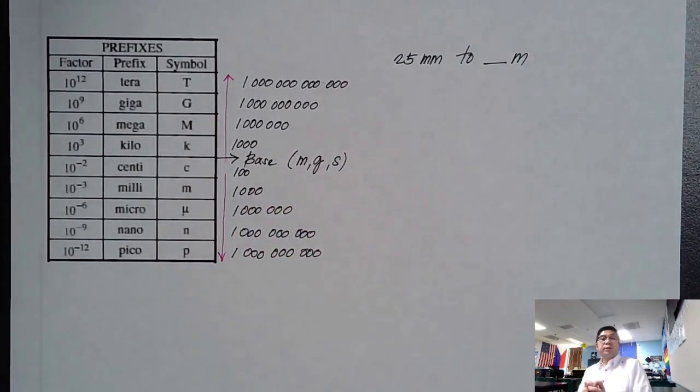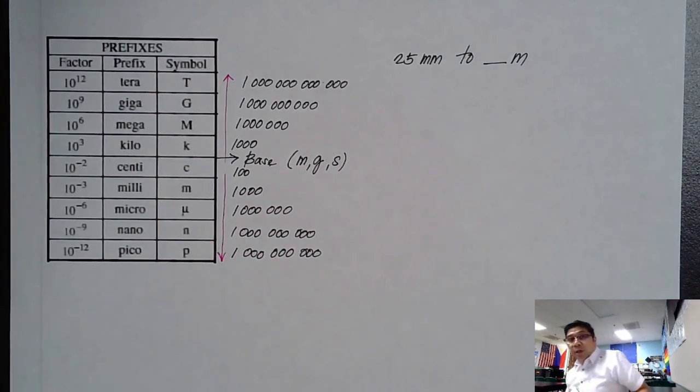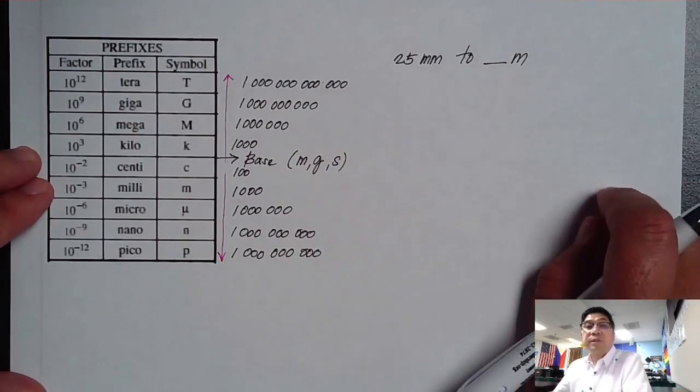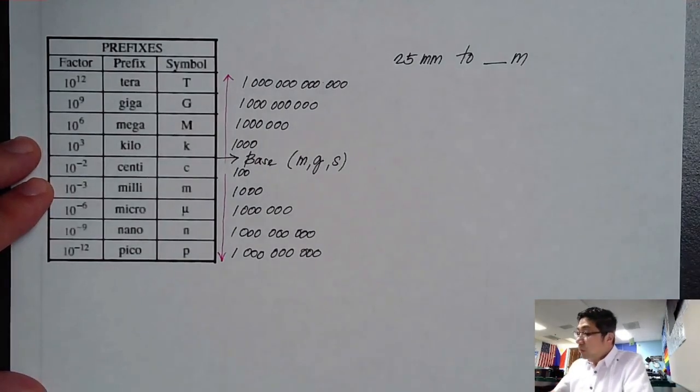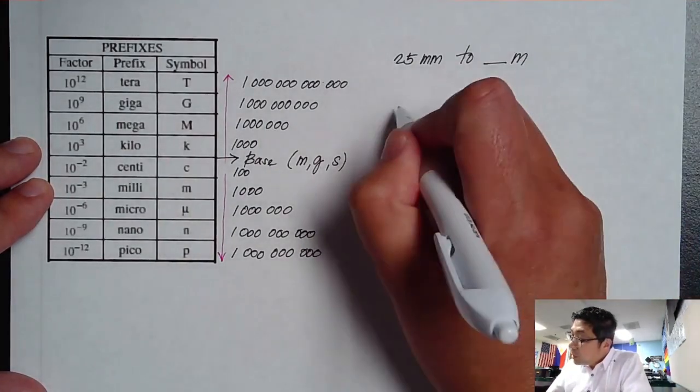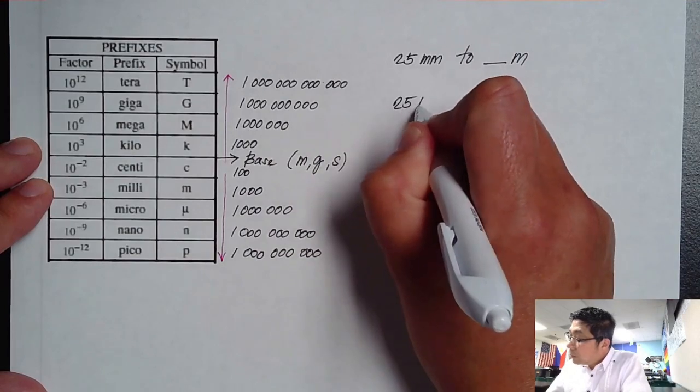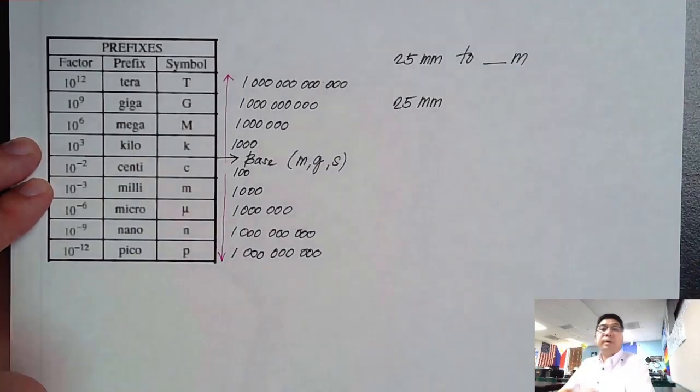So those are the base. But again, like what I mentioned earlier, we must be using kilograms as our base unit in terms of solving problems in physics one. So first thing that we should do, start with step number one, which is to copy down the unit for the given data, which is millimeters.